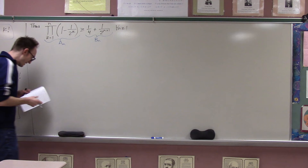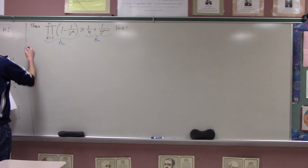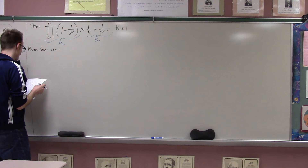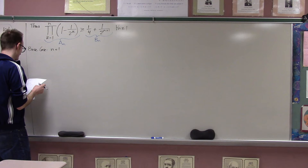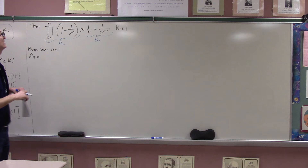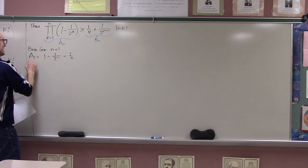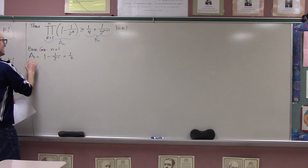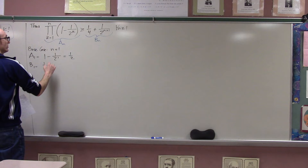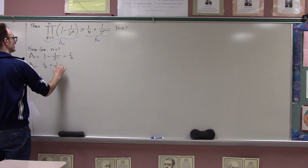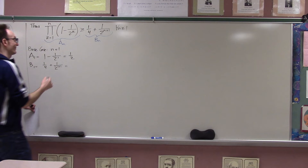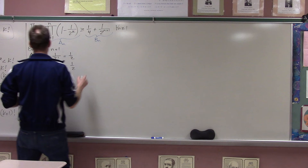Let A_n be the left-hand side and B_n be the right-hand side. Base case n=1: A_1 is the product with only k=1, which is 1 − 1/2 = 1/2. B_1 is 1/4 + 1/2^2 = 1/4 + 1/4 = 1/2. So A_1 ≥ B_1; in fact it's equal. Base case done.